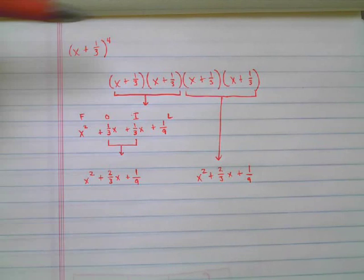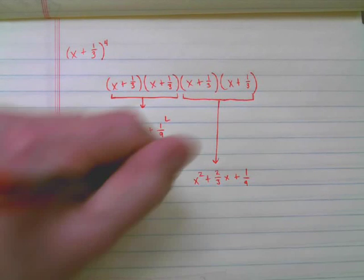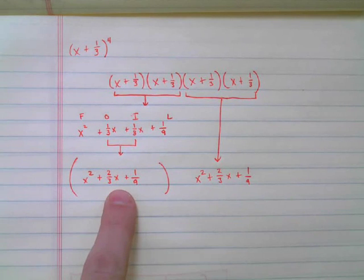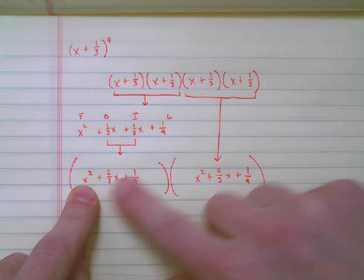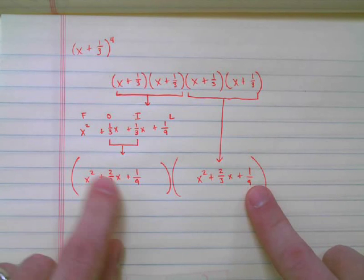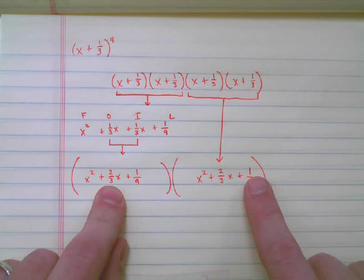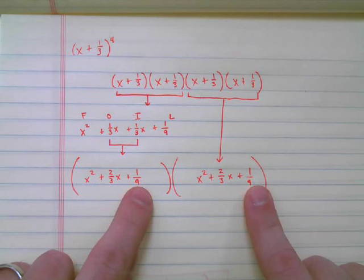So if I want to multiply, then, these two terms times these two terms, which is in essence what I'm doing, right? I just grouped them together, two and two, instead of saying all four at once. Really what I'm saying, then, is I want to multiply this thing times this thing. In order to do this, then, all I have to remember is I'm going to use the distributive property over and over and over again. I need to take the x squared here. I need to distribute to each term in the right side. I'm going to do the same thing with the two-thirds x. I'm going to distribute it three times. And then I'm going to take the one-ninth and distribute it three times. So what I'm going to end up is three, six, nine terms that I'm going to have in the end that I'm going to add together. So let's start. Here we go.